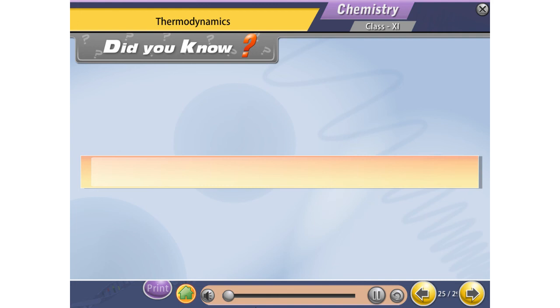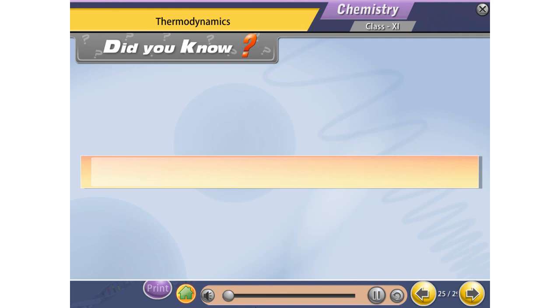The word entropy was invented by the German physicist Rudolf Clausius in 1865. Energy cannot be reused once it has turned to heat and dissipated.